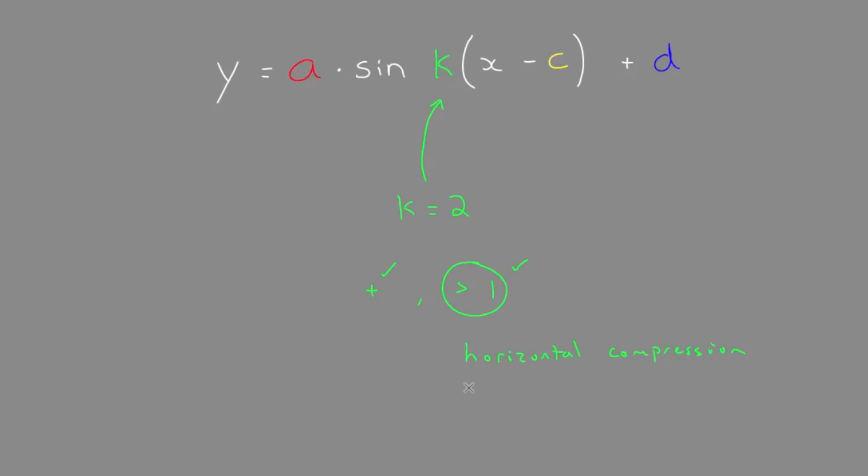By a factor of 1 over k, which would be 1 over 2. So we have to make sure we do a horizontal compression. It's being squeezed inwards by a factor of 1 half, so it's being compressed by a half horizontally.